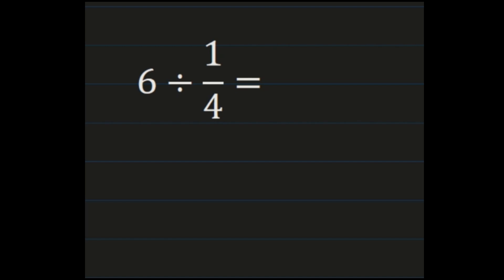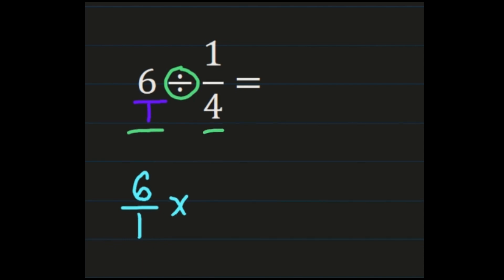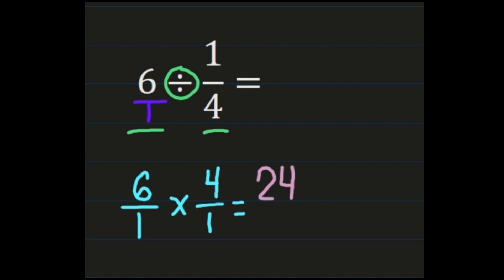In this example we have a whole number divided by a unit fraction: 6 divided by 1/4. First, turn the whole number into a fraction by putting it over 1. Then apply division steps: 6/1 stays exactly the same, change the division sign to multiplication, and multiply by the reciprocal of 1/4, which is 4/1. Now multiplying: 6 times 4 is 24, and 1 times 1 is 1. 24 over 1 simplifies to 24, so our final answer is 24.